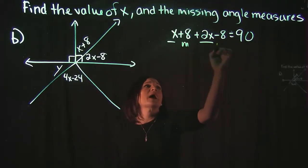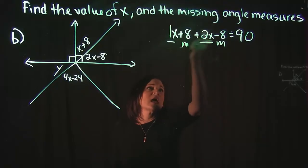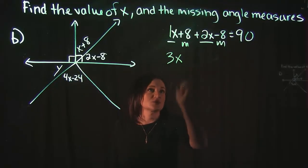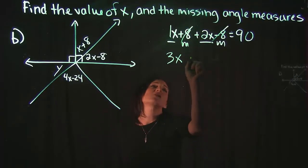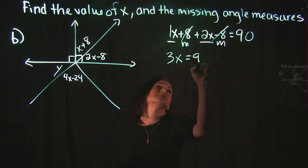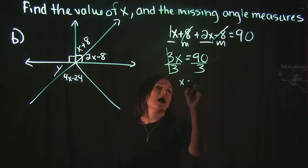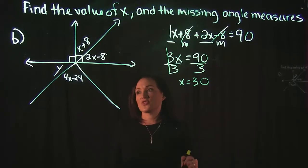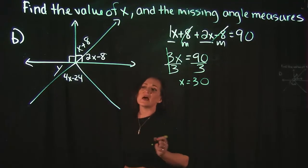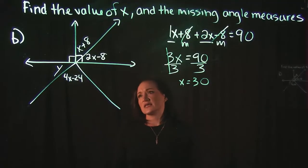1x plus 2x is 3x. Looking at our numbers, we have a positive 8 and a negative 8. That actually cancels out. So we're left with 3x is equal to 90. When we divide out the coefficient here, 90 divided by 3 is 30. So that tells me that x is equal to 30 degrees.